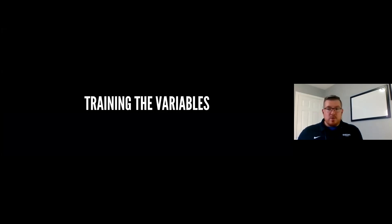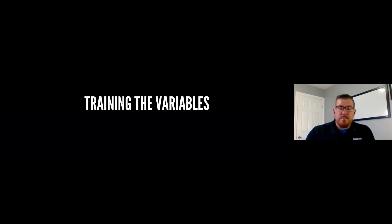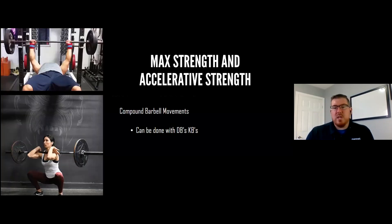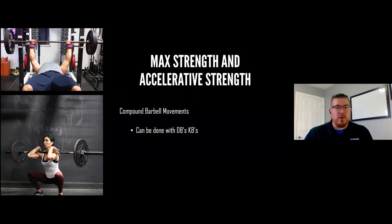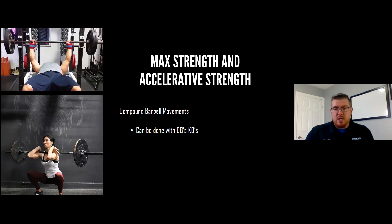How do we train the variables on the force-velocity curve? For max strength and accelerative strength, the speed ranges differ but the movements are fairly similar — generally compound barbell movements like squats, deadlifts, and rows, or variations. For example, trap bar deadlifts fall under this category depending on the speed range and focus. These can also be done with dumbbells, kettlebells, or weighted vests depending on available equipment.